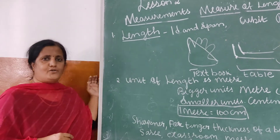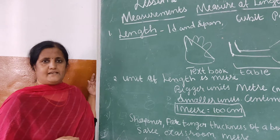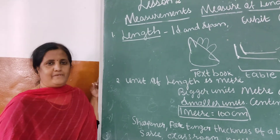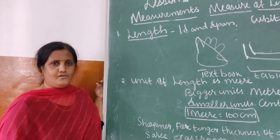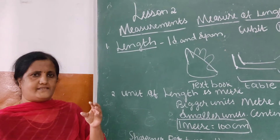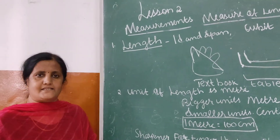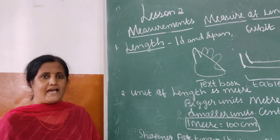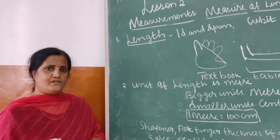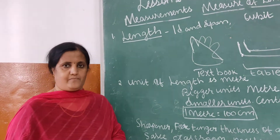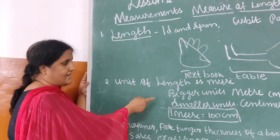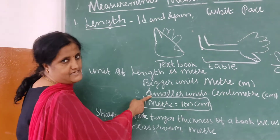Do you notice when you go to a shop to get a shirt piece, you say you want five meters of length? That is what we call the unit of length — meter. For smaller things, like a bangle, you cannot say one meter. You say centimeter. So bigger units are measured by meter and smaller units are measured by centimeter.